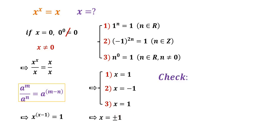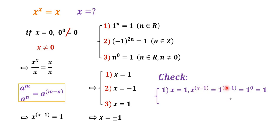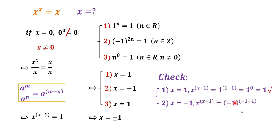To check these two solutions: in the first case, x is equal to 1, then x to the power of x minus 1 is equal to 1 to the power of 1 minus 1, which is 1 to the power of 0, equal to 1. This is correct. In the second case, x is equal to negative 1, then x to the power of x minus 1 is equal to negative 1 to the power of negative 1 minus 1, which is 1 over negative 1 squared, equal to 1. This is also correct. So the final answer is x is equal to positive or negative 1.